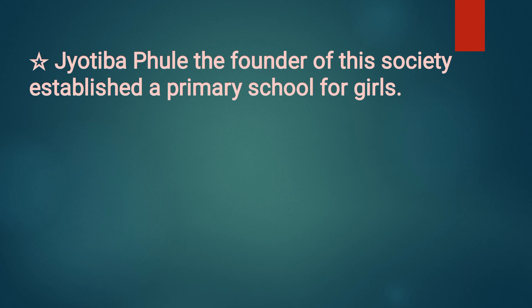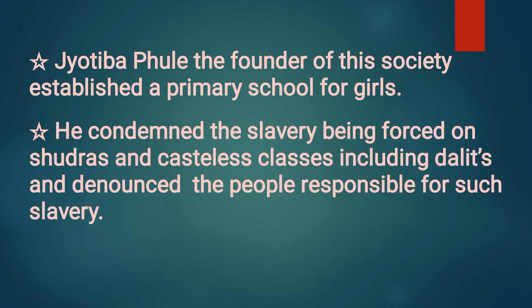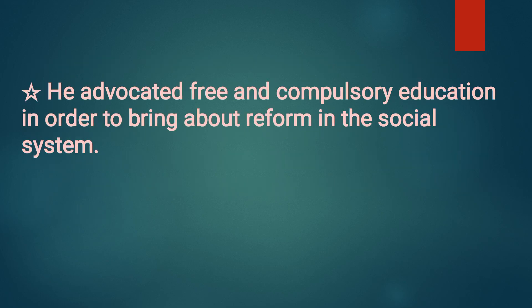It started a movement for social justice. Jyotiba Phule, the founder of this society, established a primary school for girls. He condemned the slavery being forced on Shudras and casteless classes including Dalits and denounced the people responsible for such slavery. He advocated free and compulsory education in order to bring about reform in the social system. These are the reforms propagated by the Satya Shodhaka Samaj.